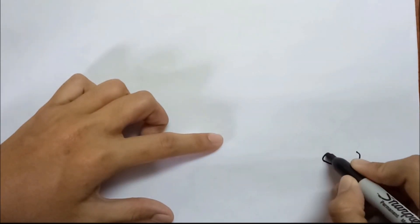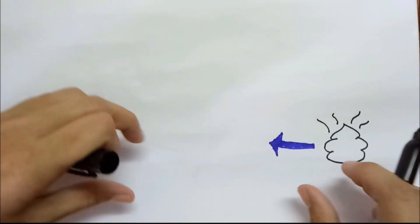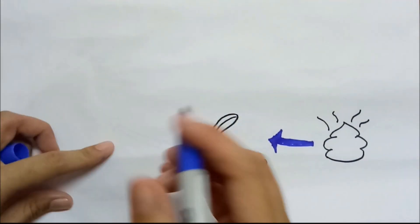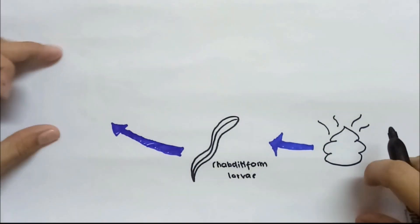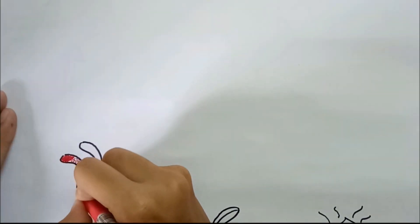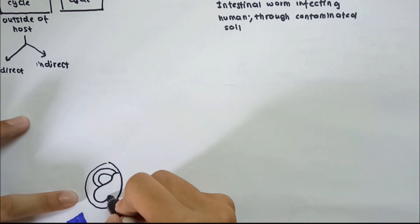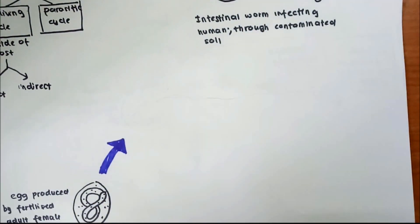Now let's discuss the free living cycle of Strongyloides stercoralis. For the indirect route, the rhabditiform larvae found in infected stool that is excreted will contaminate the soil. These rhabditiform larvae will then undergo indirect development into free living adult worms — both male and female — which undergo sexual reproduction and produce eggs fertilized by the female worms.